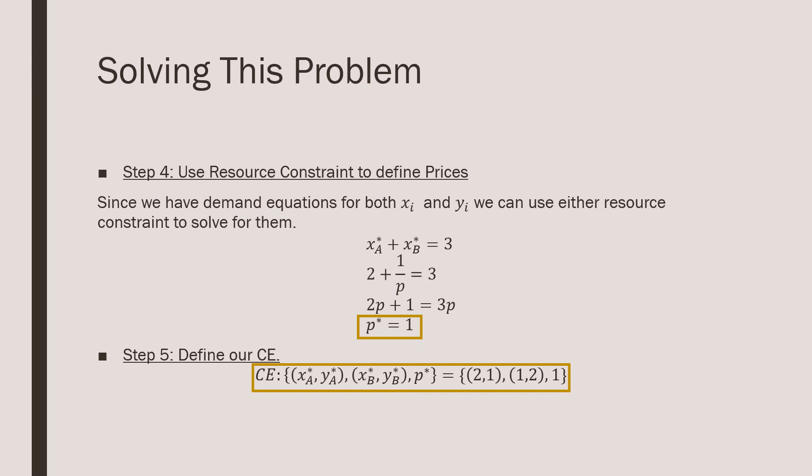Step number five is that we're going to define our competitive equilibrium formally. Consumer A is going to have two of X and one of Y, and consumer B will have one of X and two of Y. That allocation is supported by the price P equal to one. So that's the first video on our example series on solving for competitive equilibrium in this economy. I'll see you in the next one. Take care.